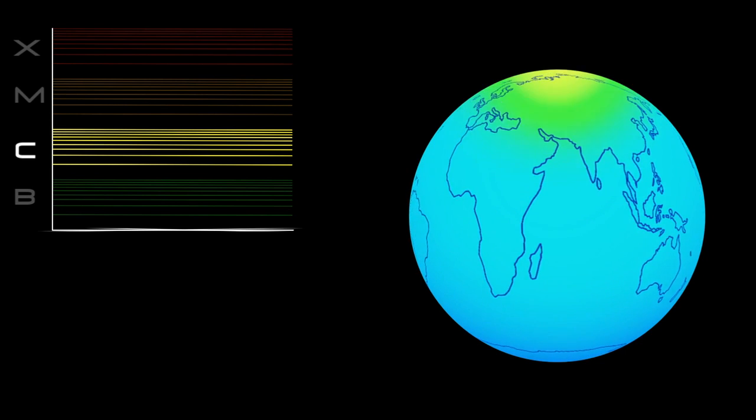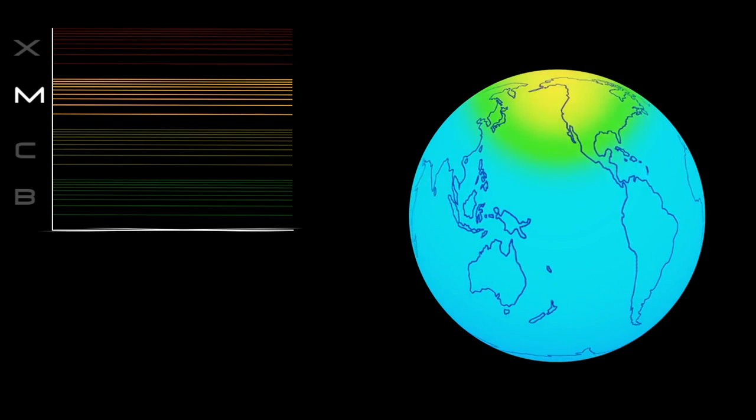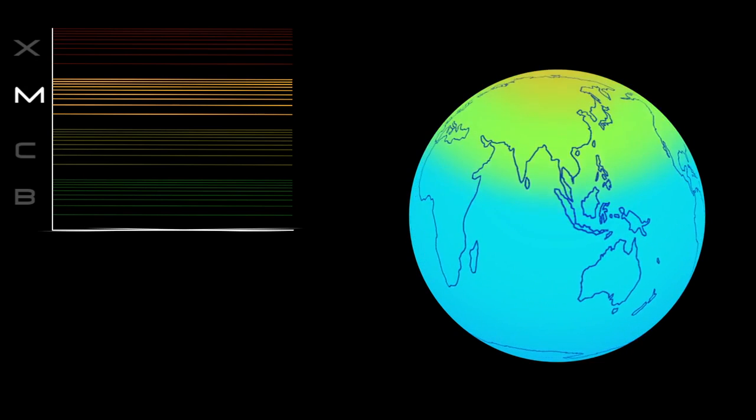C-class flares are too weak to noticeably affect Earth. M-class flares can cause brief radio blackouts at the poles and minor radiation storms that might endanger astronauts.